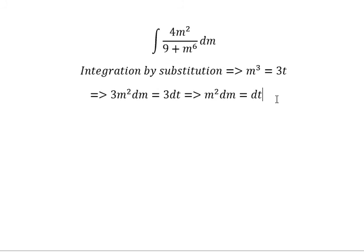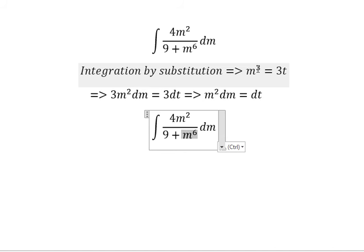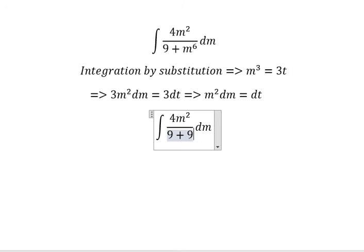And then we divide both sides with number 3. Now we need to change this integral. We have m to the power of 3, so if we do put power 2 you will get 9t squared. M squared dm we change for dt.